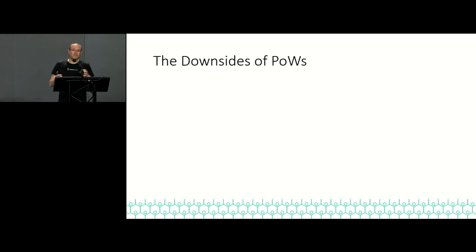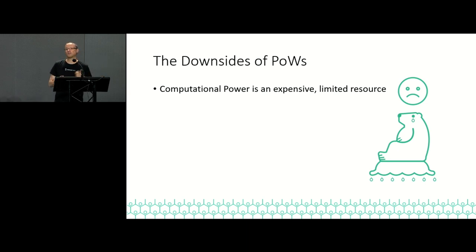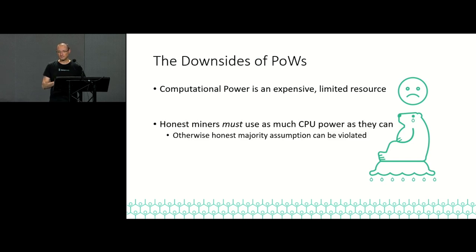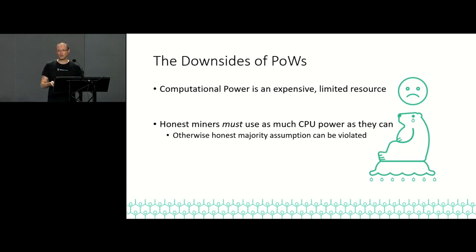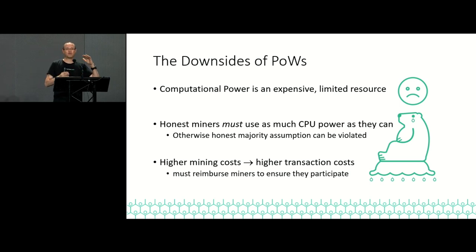Races are bad, but proofs of work themselves are also bad. Computational power is an expensive limited resource — and it's expensive not just in monetary costs but also in environmental costs. Bitcoin is equivalent to something like a medium-sized country in energy usage; that's a lot of carbon and a lot of sad polar bears. This is inherent to proof of work — we can't just work a little bit less, because the whole point is that honest miners need a majority of the power. If they stop working, only adversaries keep working and we violate the honest majority assumption. And because it's so expensive monetarily, we pay this in transaction costs to reimburse miners.